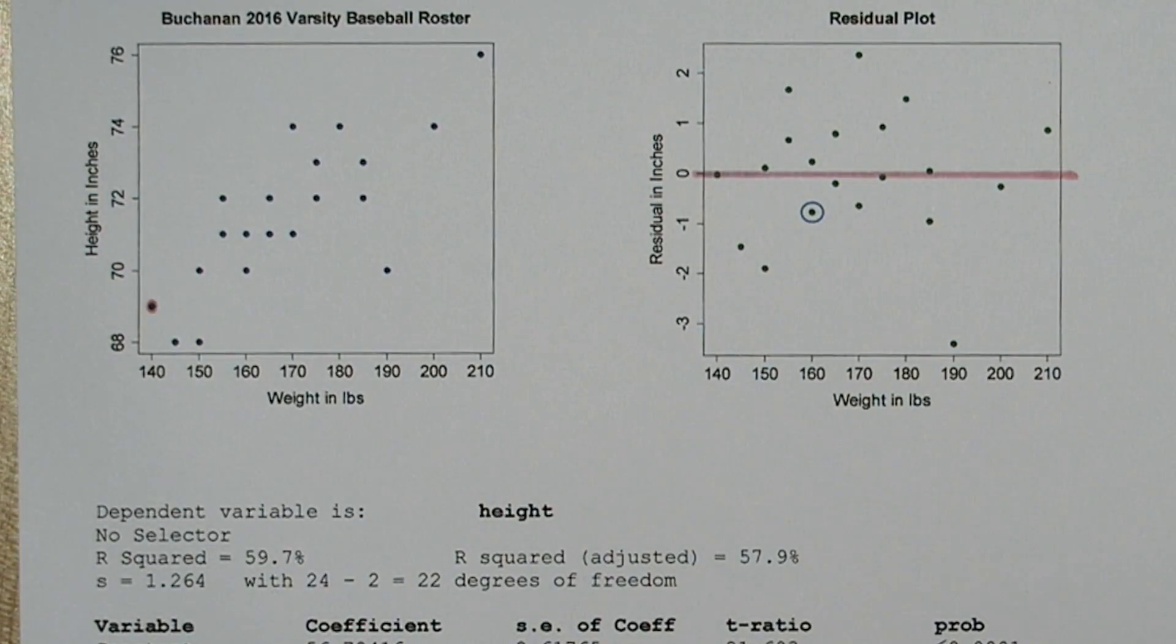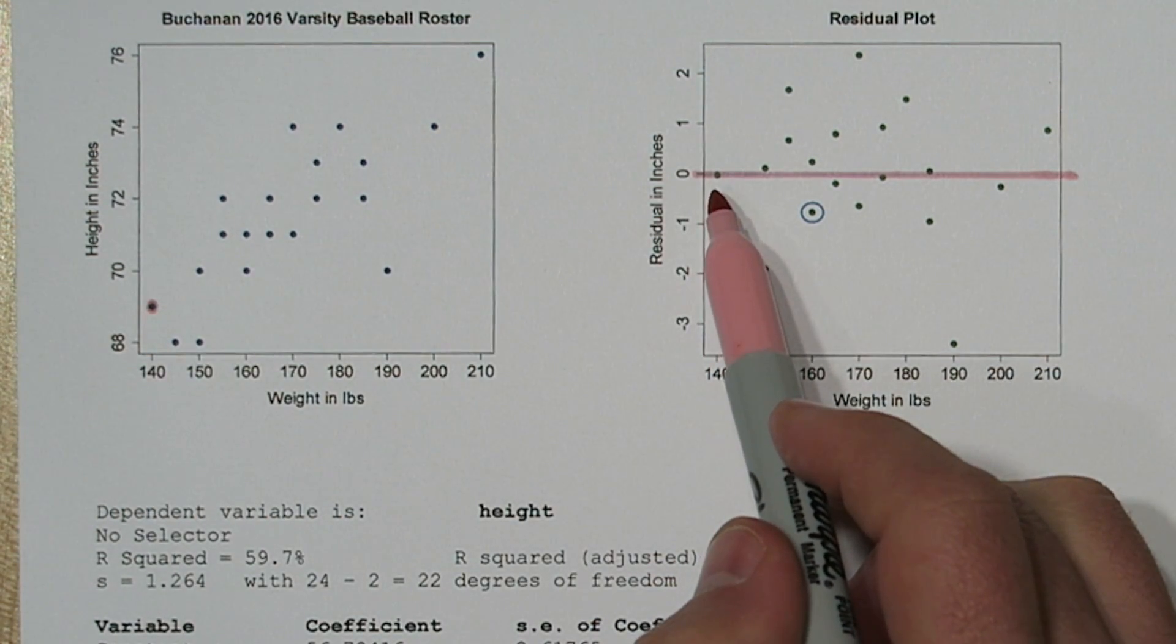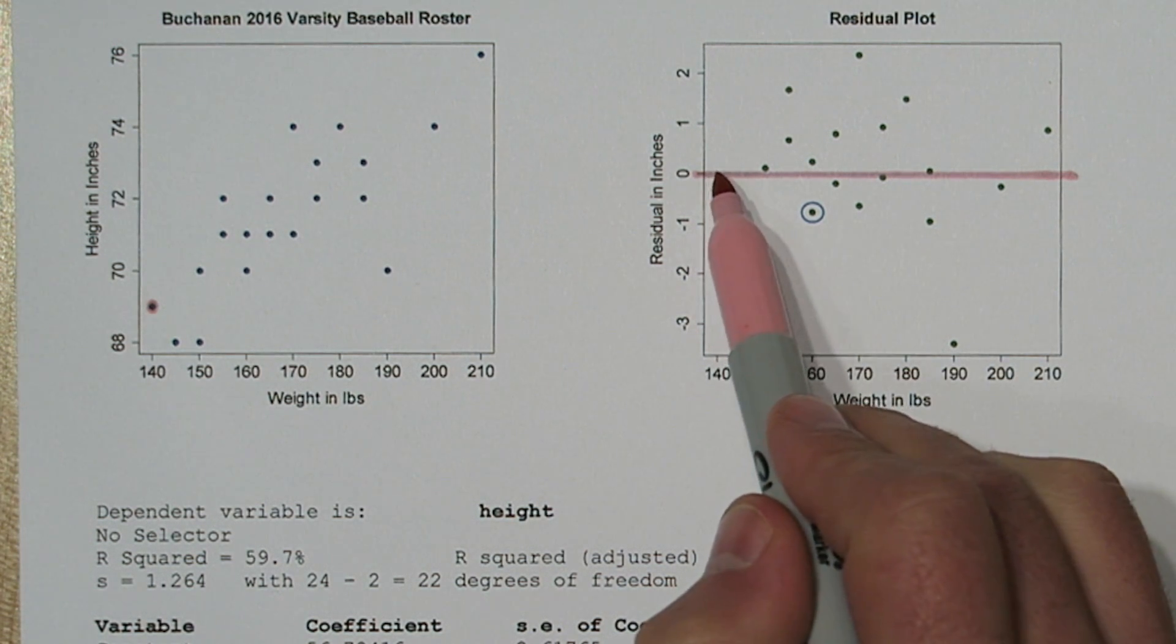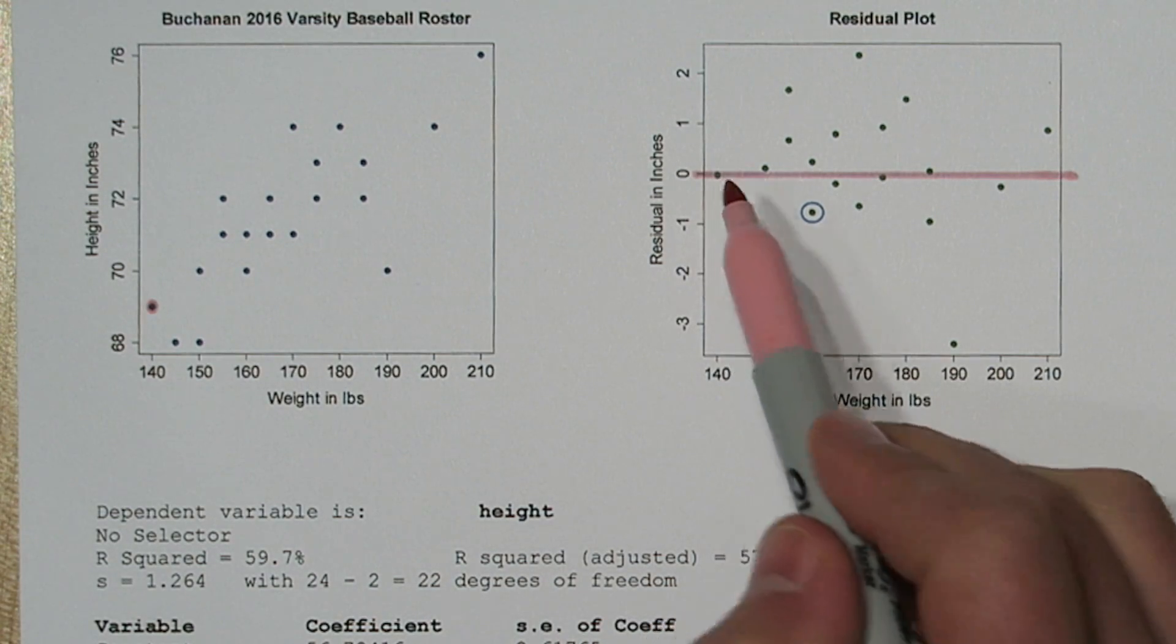So actually this first point, 140, 69, corresponds with this point in the residual plot. We actually have a player that weighs exactly 140 pounds and is 69 inches. It's the one our model predicted perfectly.